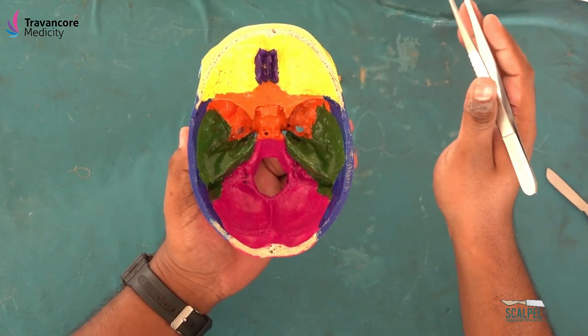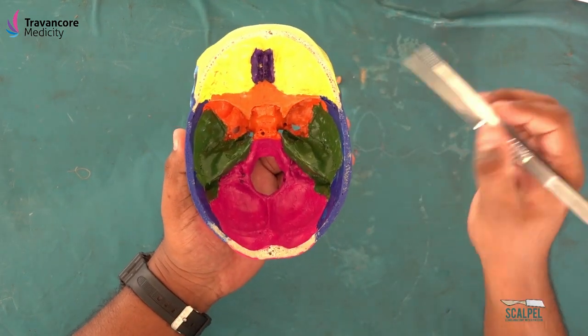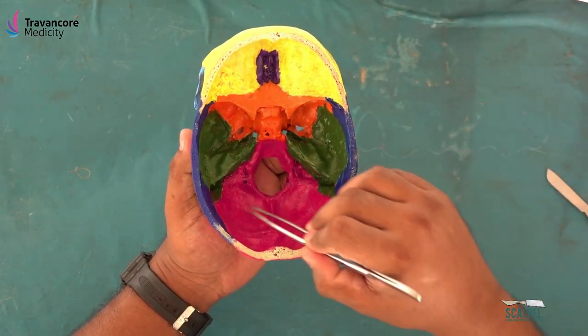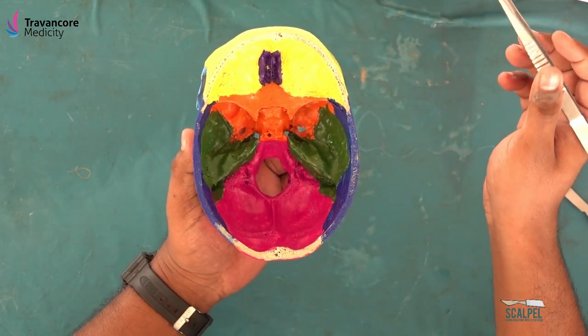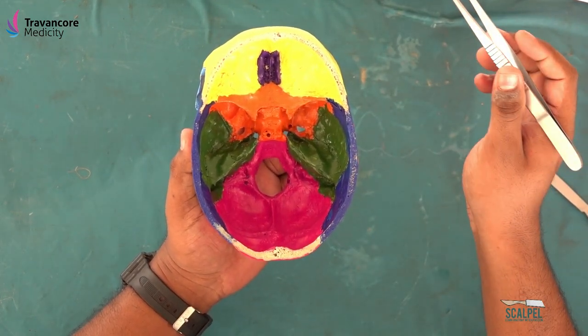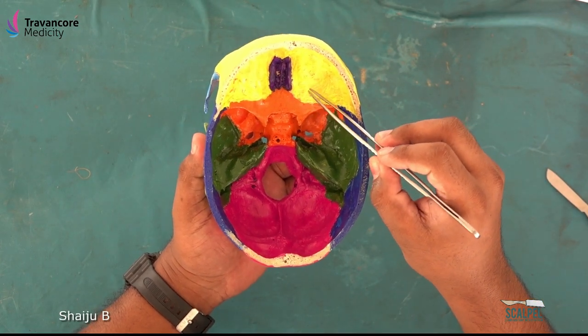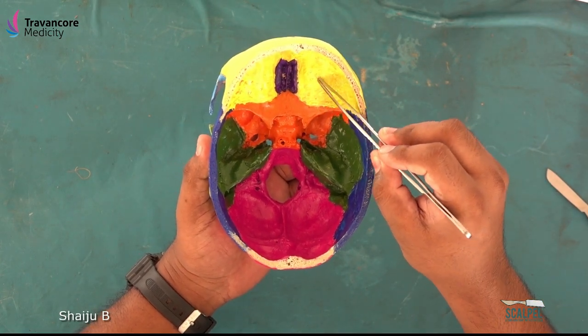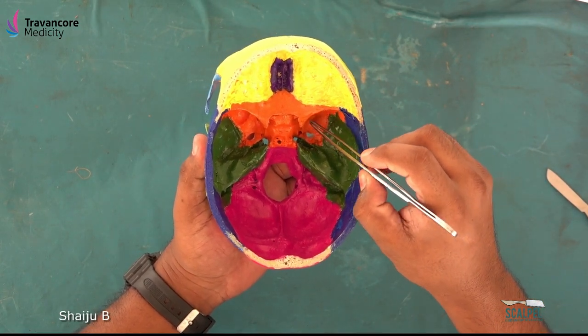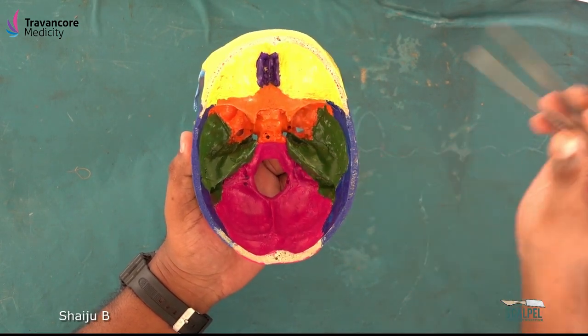After removing the calvarium, we can see the internal surface of the cranial fossa. The cranial fossa is divided into three parts: anterior, middle, and posterior.